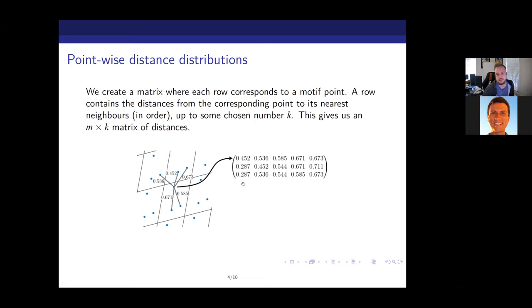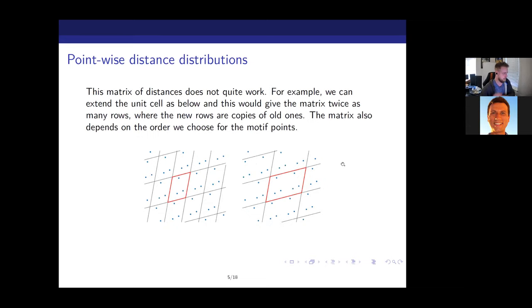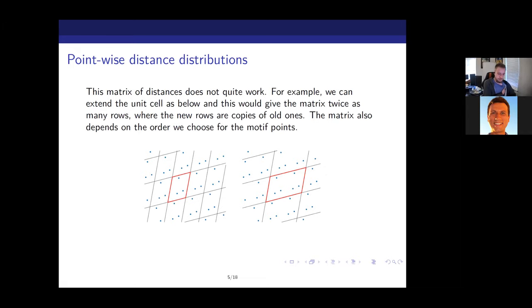There are some clear issues with just this raw matrix that we need to fix. The most obvious is that we can choose a different ordering for our motif points, causing the rows to be differently ordered — which is a problem because the ordering of motif points means nothing. We want the descriptor to be independent of the ordering of the motif.